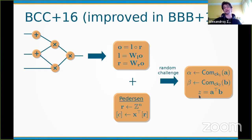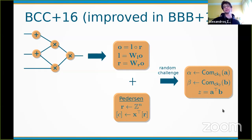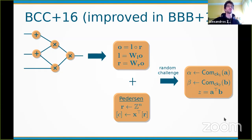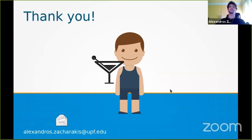The prover and verifier run a protocol reducing the inner product statement to a half-size instance. After a logarithmic number of rounds, a constant statement remains and the prover reveals the witness. Combining this with the parameterized Pedersen commitment and recursive structure reduces verifier time from linear to logarithmic. The universal CRS is essentially the commitment key, which is efficiently updatable, yielding the full updatable zk-SNARK.